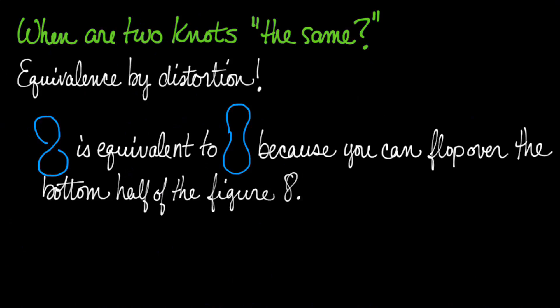Here's a beginning example. The figure 8 here, this knot, is definitely equivalent by distortion to this peanut-y shape. Because you can take that bottom half of the figure 8 and imagine yourself flopping it over, and it becomes the other diagram.